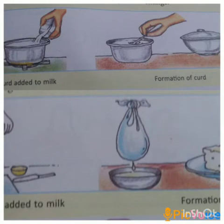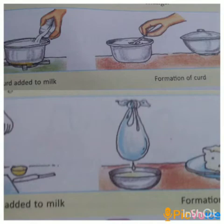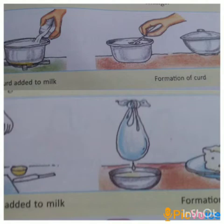Some other examples: change of season takes a longer duration of time, so it is a slow change. Growth of a plant also takes a longer duration of time. Rusting of iron also takes a longer duration of time, so all these are examples of slow change. Burning of paper, lighting of a bulb, and cutting fruits or vegetables all take place quickly, so they are examples of fast change.